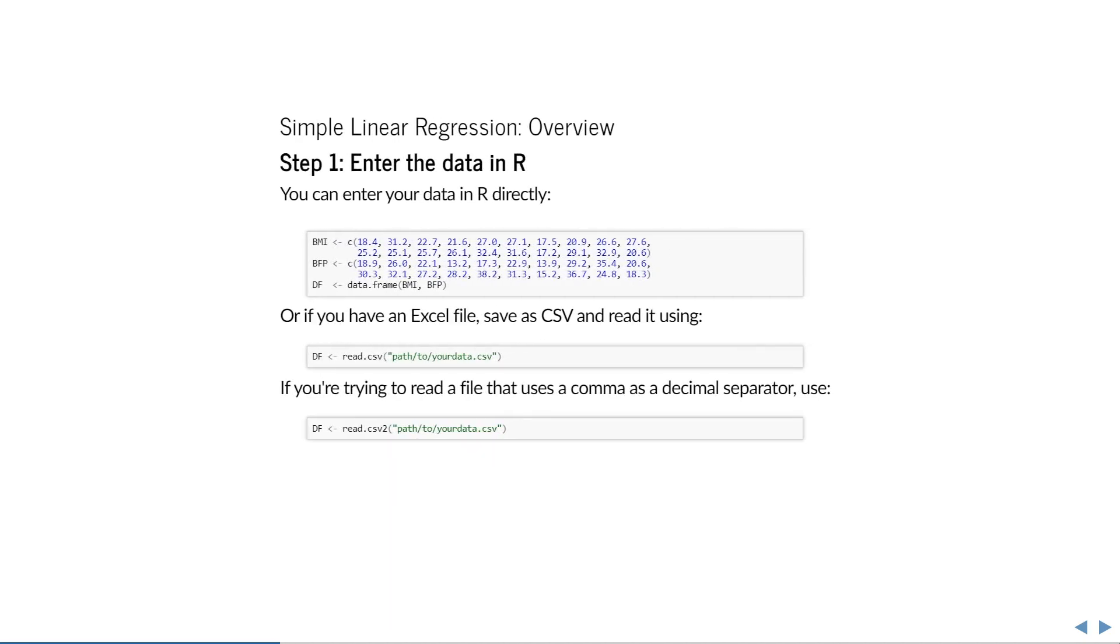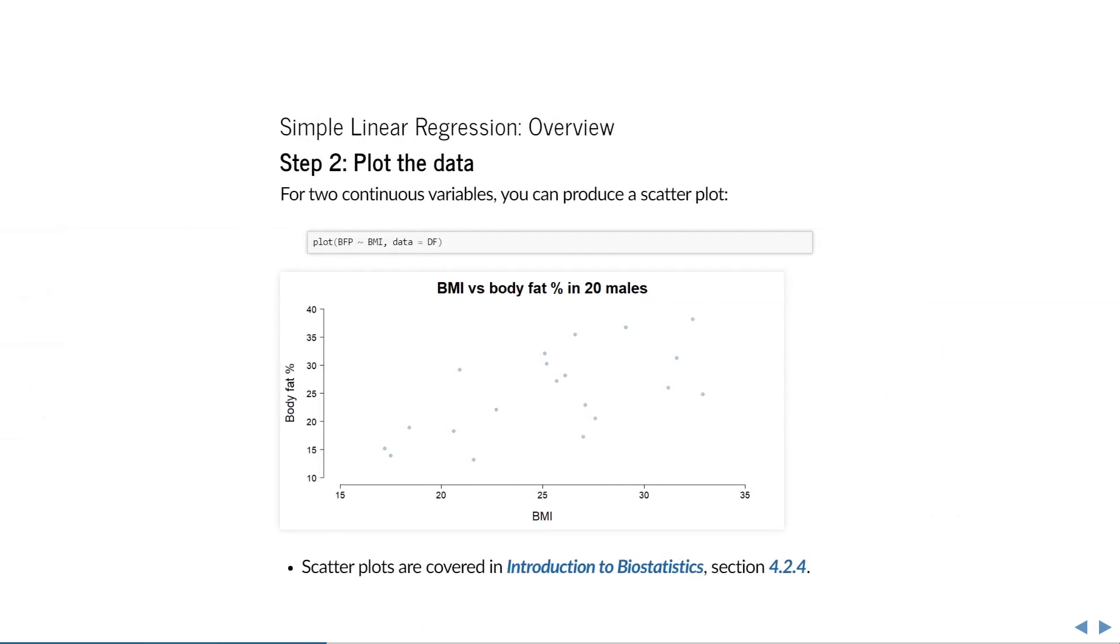The first step is to read your data into R. Here I've shown how to make a data frame from the example data, but you could also of course read your data from an excel file. The second step I always recommend is to try and make some relevant plot of your data. Here I've shown a scatter plot with body fat percentage on the y-axis and BMI on the x-axis. This already shows that there is more or less a linear relationship. When BMI goes up, then on average body fat percentage also appears to go up. We can also see that although there appears to be a linear trend, there is still a lot of unexplained variance.